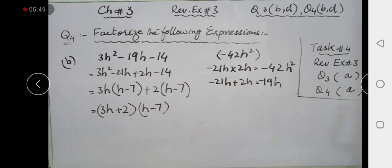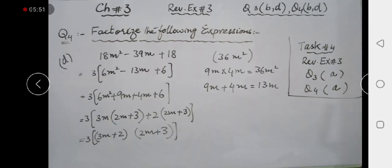Then here d part. Question 4 ka d part. Here you have 18, 39, then again 18.